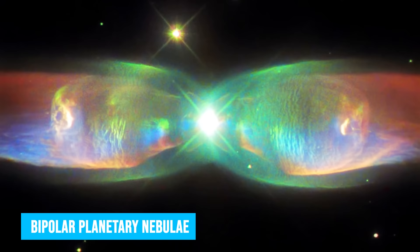Bipolar planetary nebulae are formed when the central object is not a single star, but a binary system.